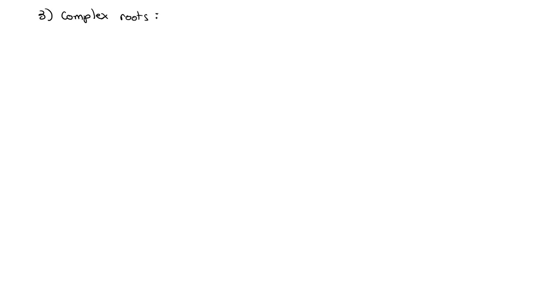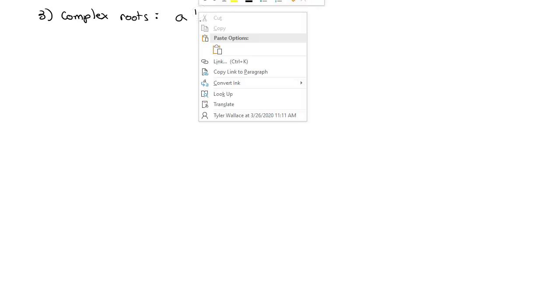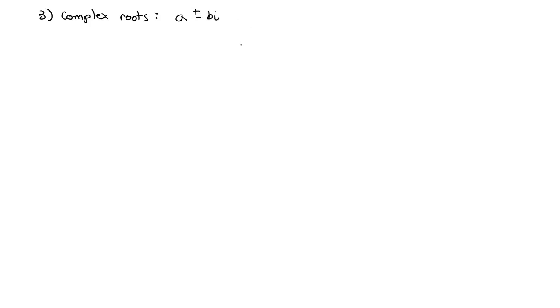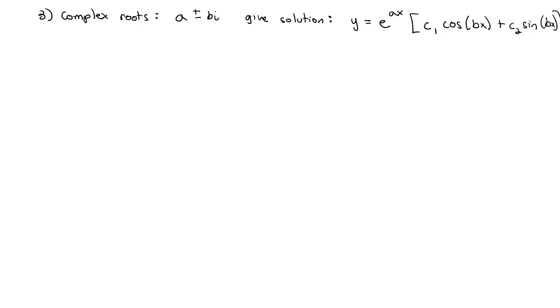We haven't talked about the complex case yet, so let's do that next. Complex roots always come in pairs — essentially a ± bi — which give the solution y = e^(ax) times (c1·cos(bx) + c2·sin(bx)). That e^(ax) comes from the real part, and the cosine and sine terms come from the complex part. Let's take a look at a couple of examples of this working out.